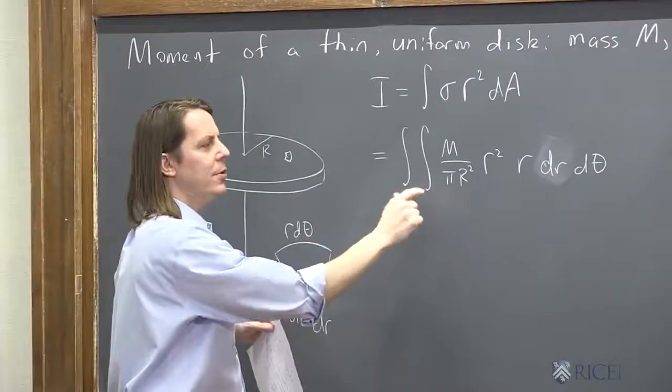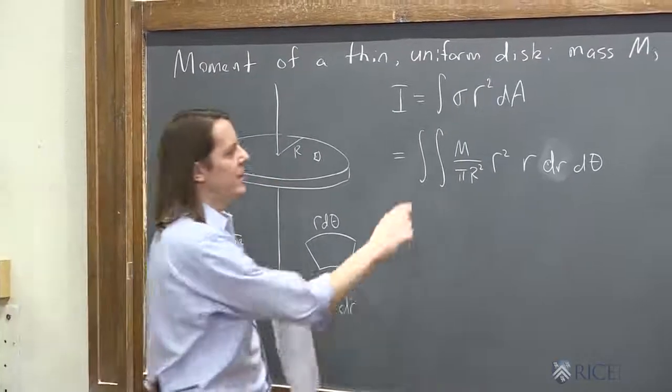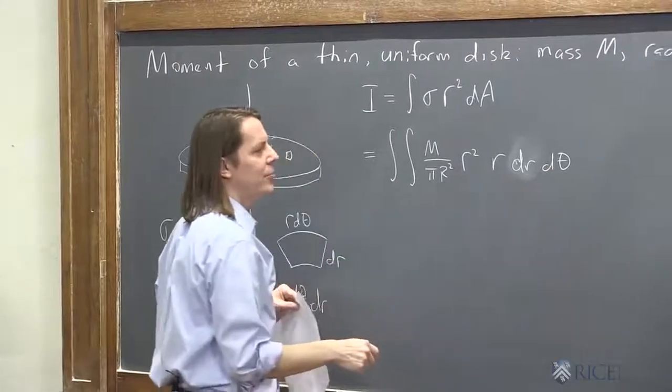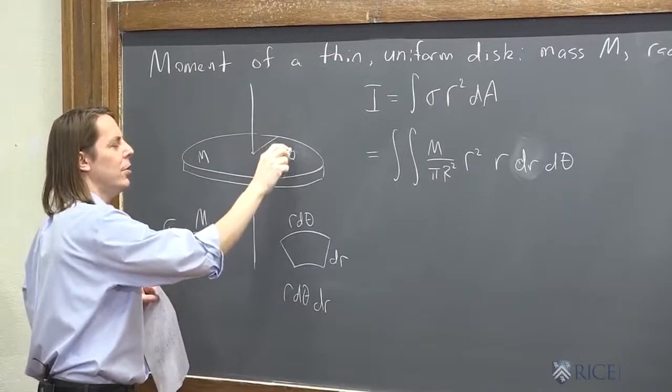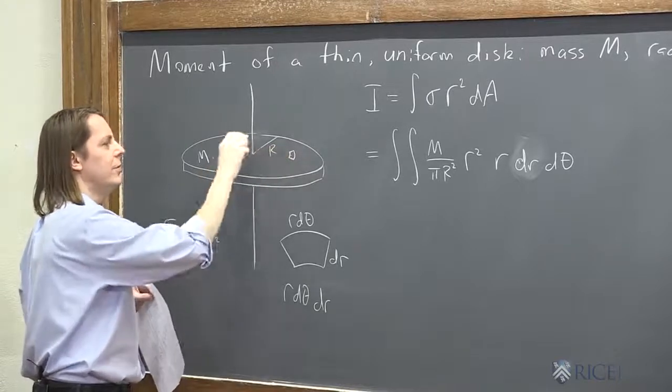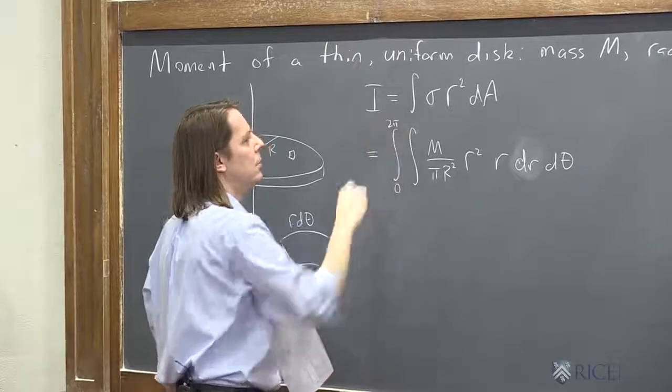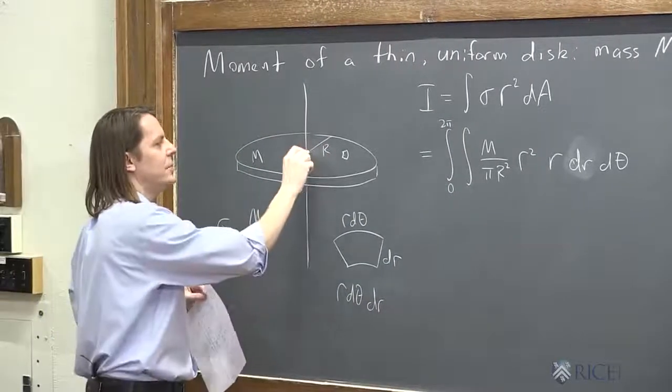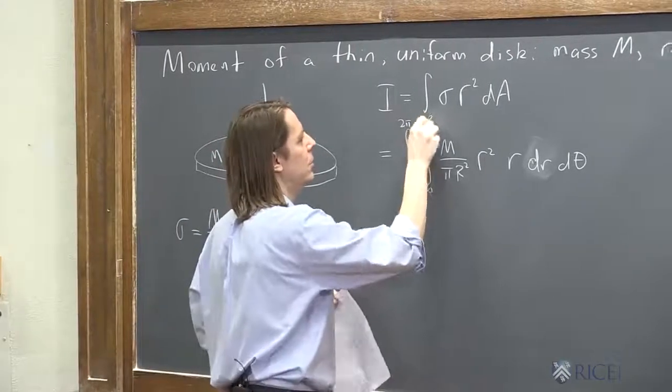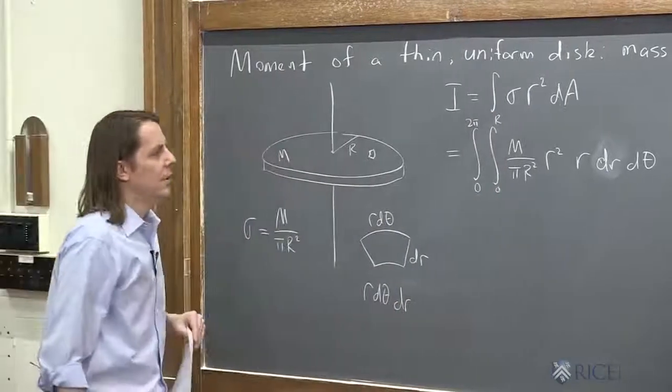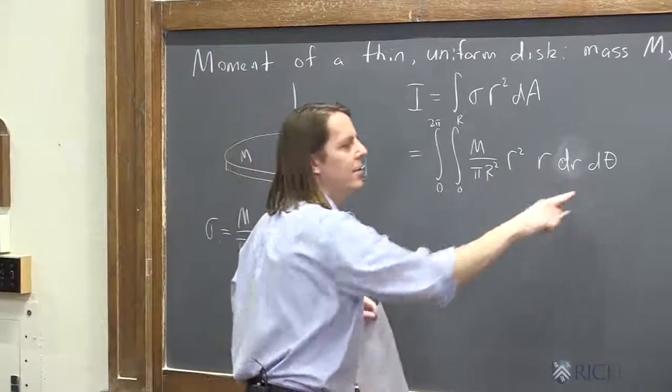And then the two integrals that go with the two differentials, we've got to put limits on them to actually describe this actual disk. So the outside integral goes with the outside differential. To add up every piece of this disk, we have to do these little rectangles at every radius and all the way around 360 degrees. So that would be 0 to 2 pi all the way around for theta. And we've got to catch R everywhere between 0 and big R. So that integral is 0 to big R. And then I think we're in pretty good shape here.